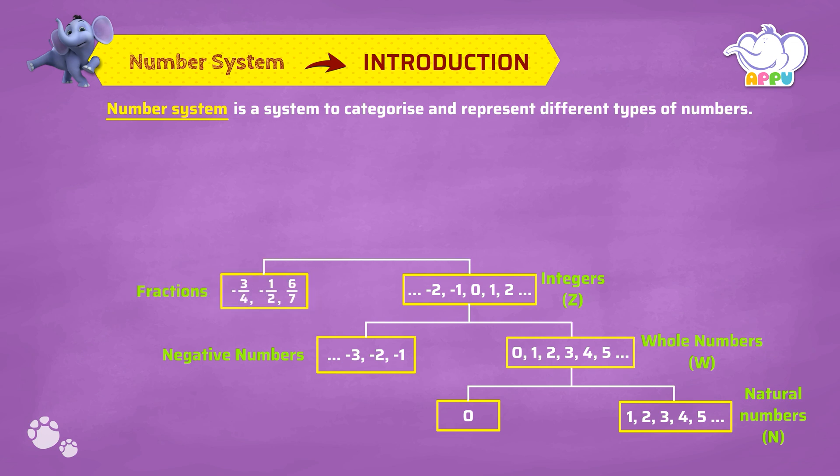Minus 3 by 4, minus 1 by 2, 6 by 7 are few examples. The integers along with the fractions are rational numbers denoted by capital Q.